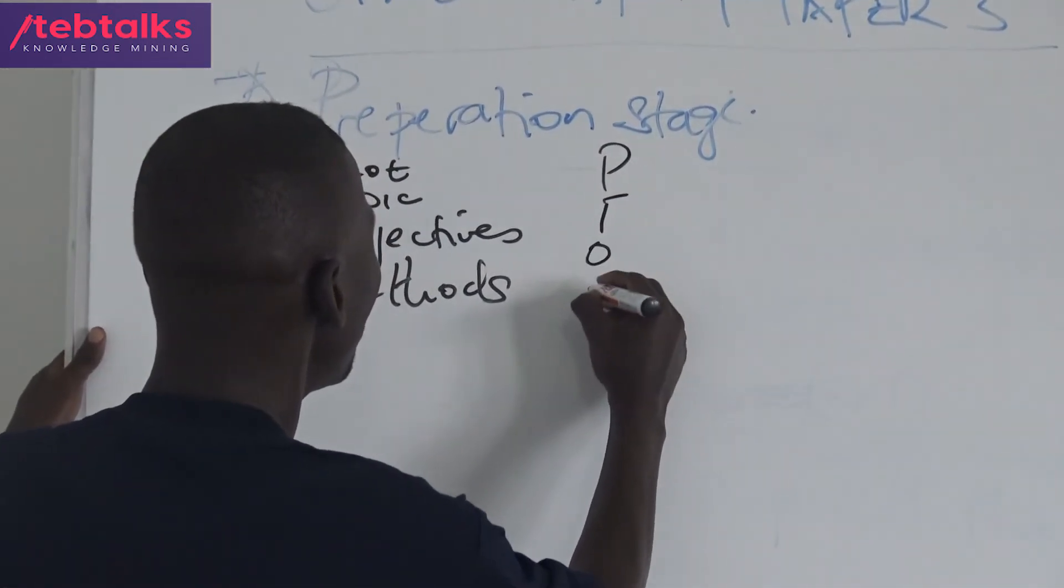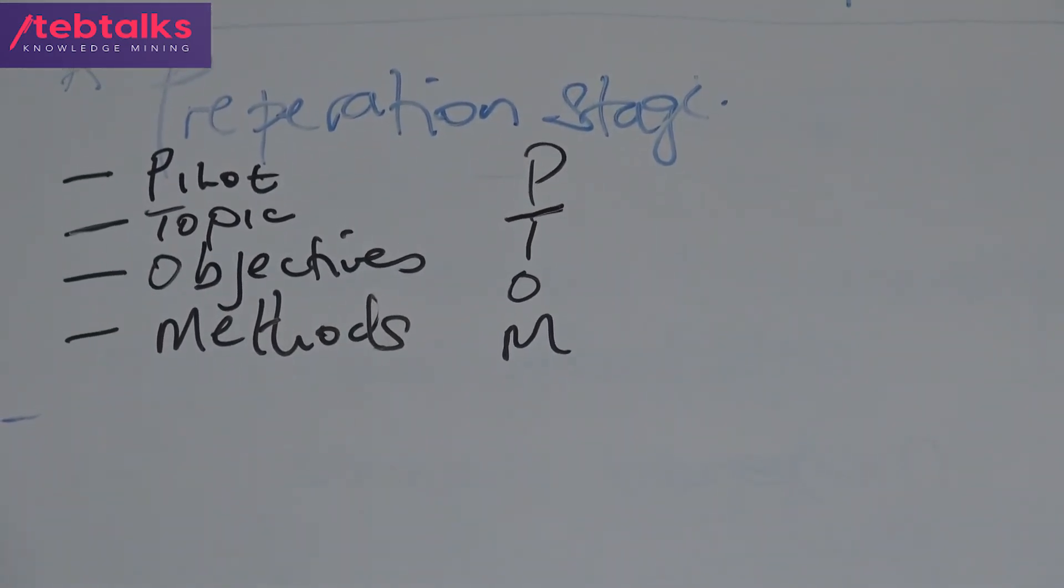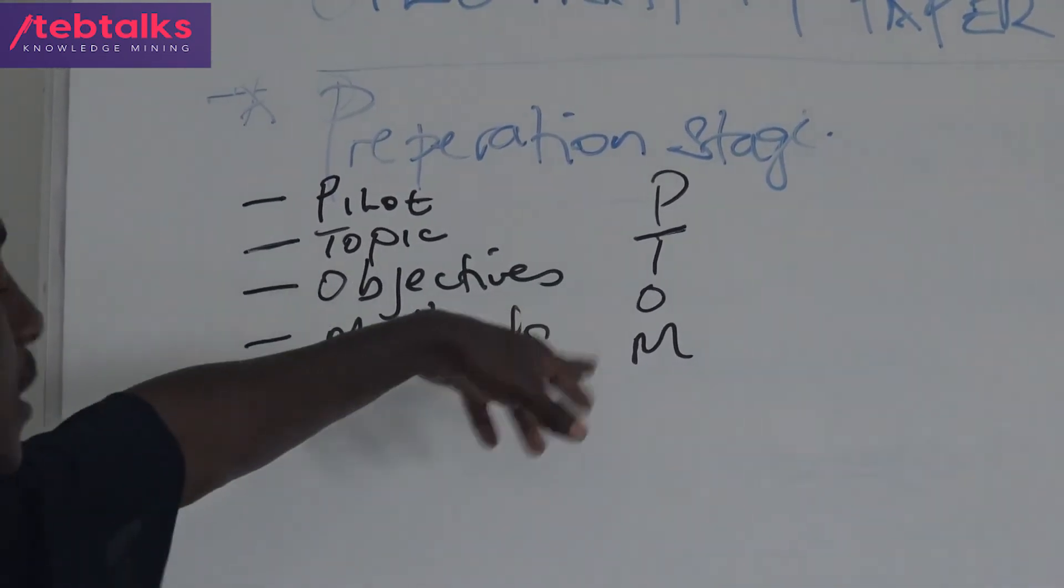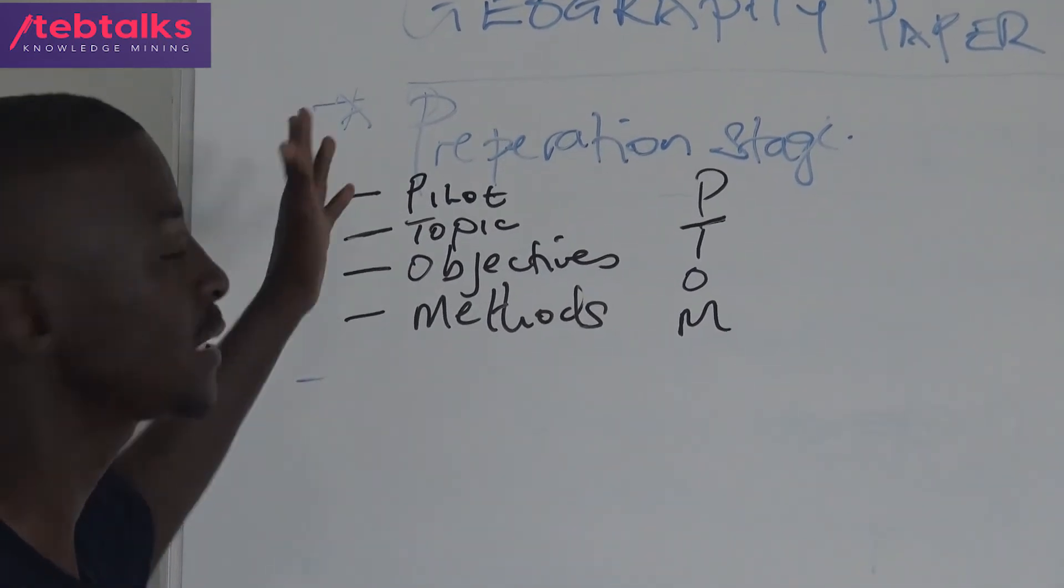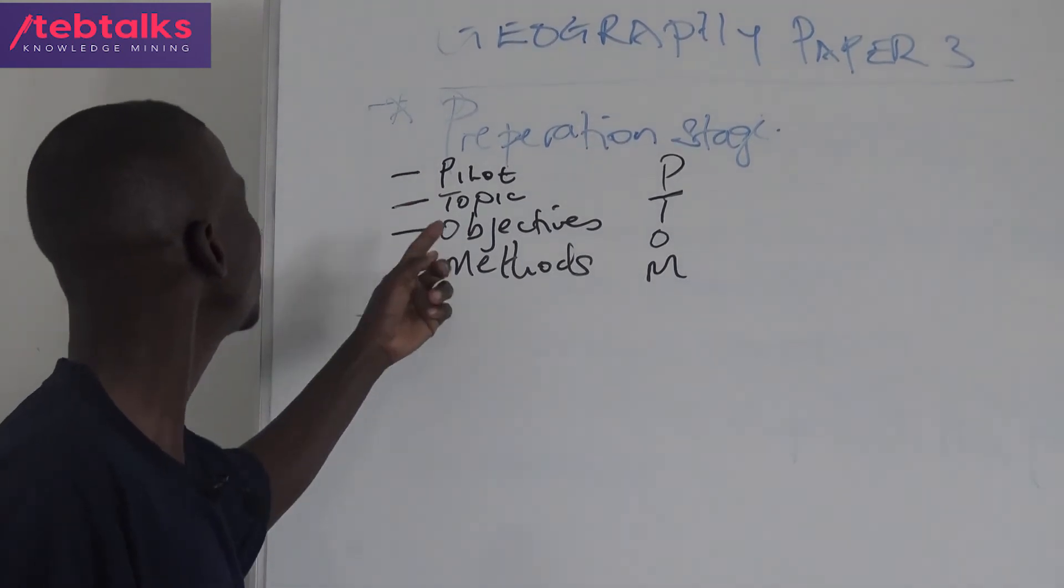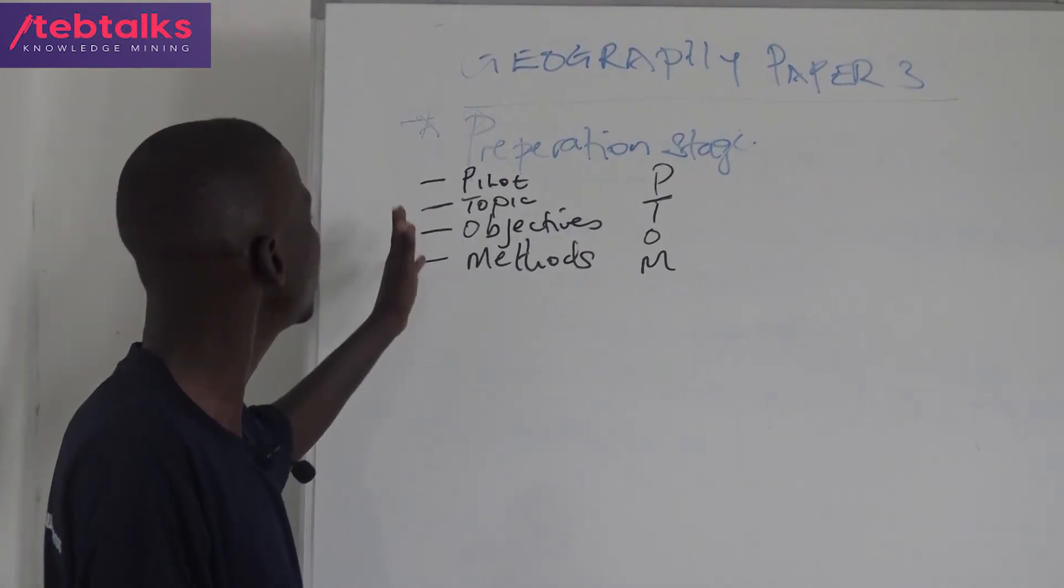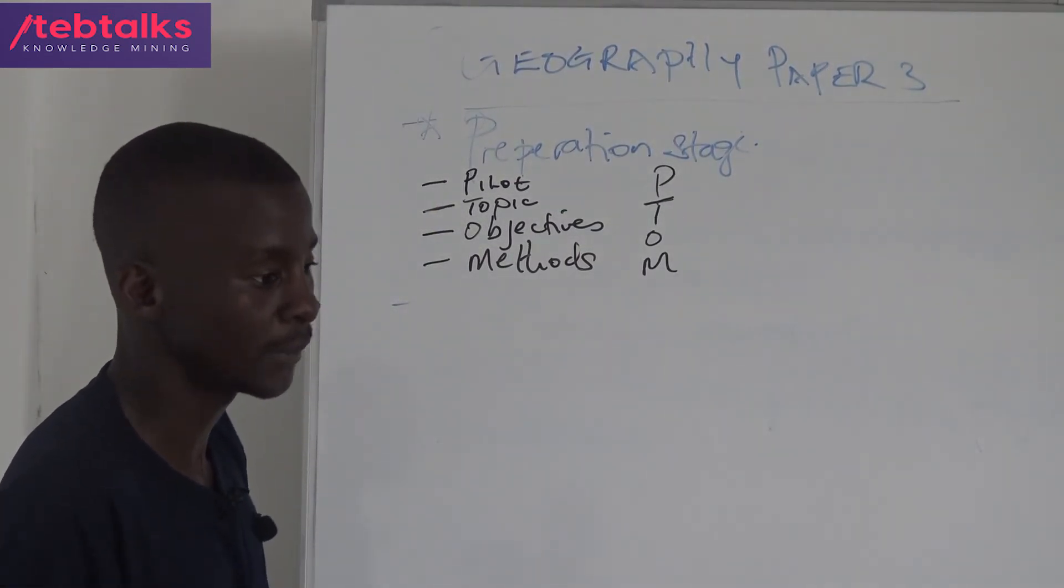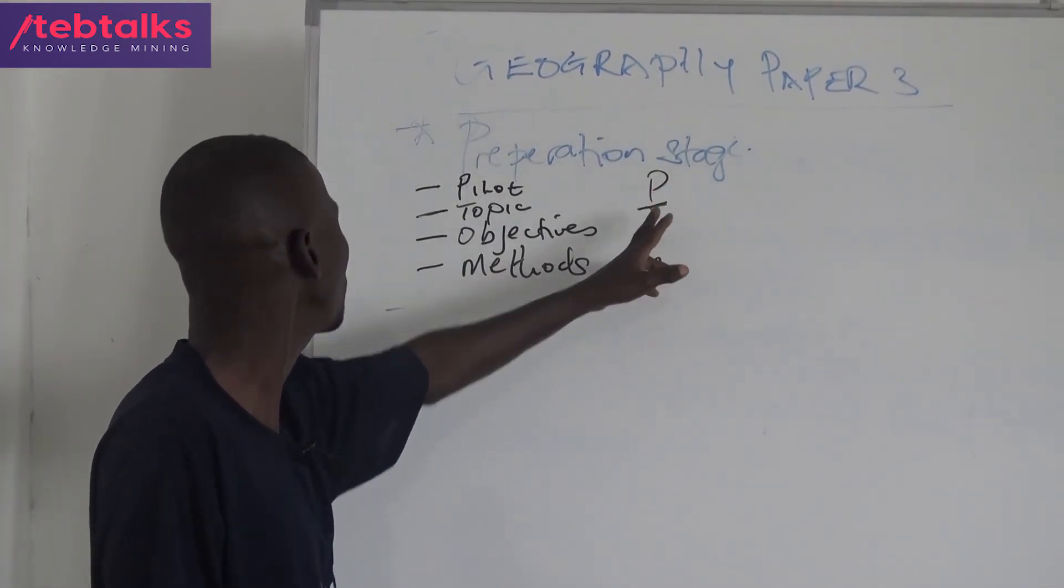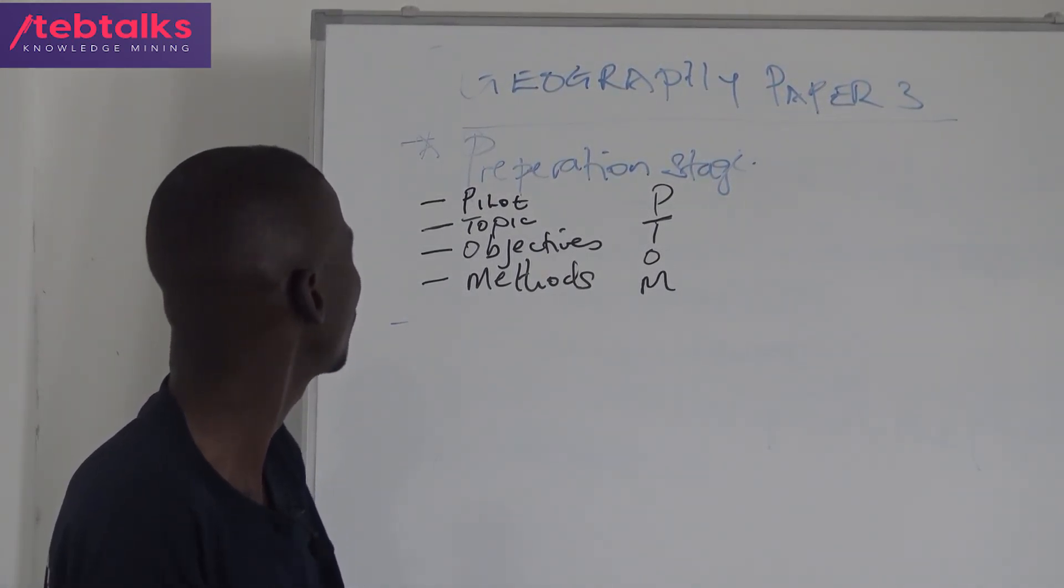This is summarized in a word: PITOM. For remembrance, so you don't forget, you have to memorize that word PITOM. That is the order. The preparation stage has its order. The method cannot come before pilot. Neither can objectives come before topics. We have to recognize them and write them in their correct order: Pilot, Topic, Objectives, and Methods of data collection.